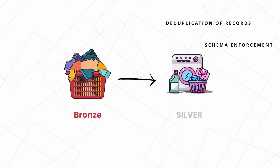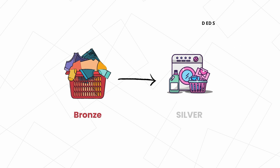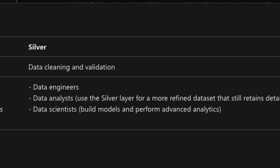At the silver layer, schema enforcement and typecasting ensures that each field is consistent across the board. You may also need to join or merge data sets — for example, combining customer details with transaction logs for a comprehensive view. Data standardization also happens here, handling null values and quarantining erroneous records. In terms of usage, data engineers work here, but data analysts also use the silver layer when they need a more refined data set that still retains detailed information for in-depth analysis.